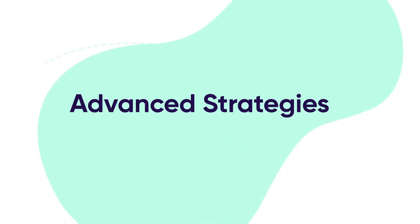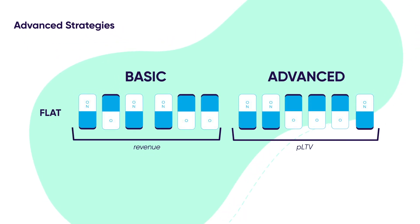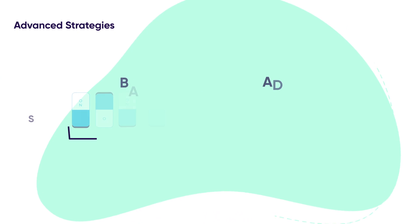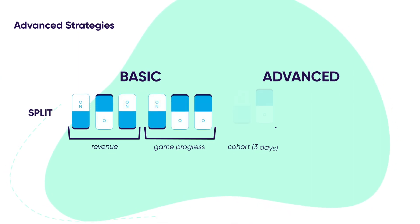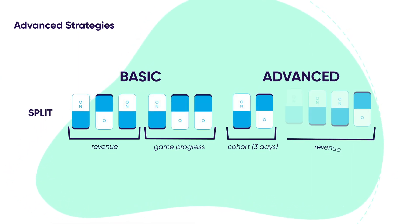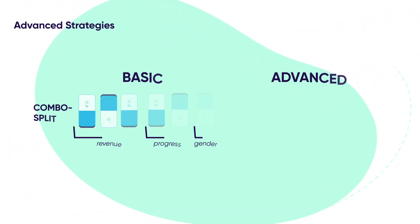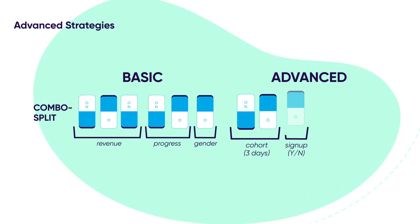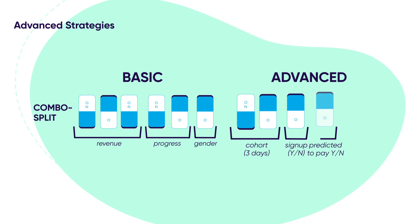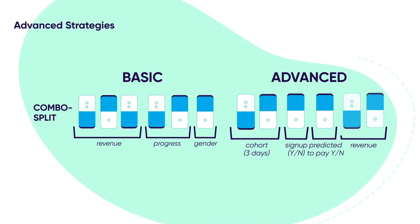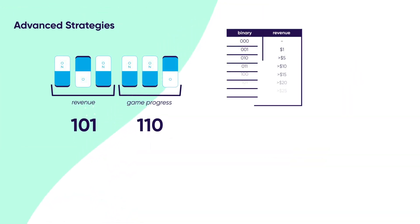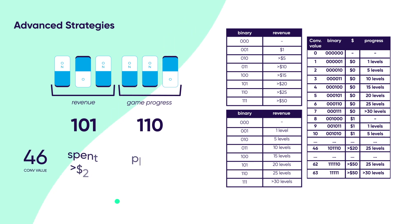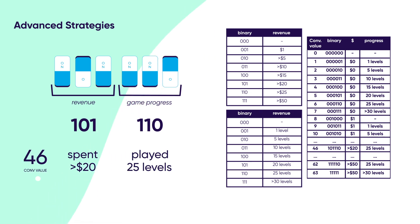Once you have the basic strategies down, there are some more advanced options too. First, you can use the flat splitting method for predictive analytics. Alternatively, an advanced split method might use two bits relating to cohort data and the remaining four bits to measure revenue. Finally, an advanced combo split method might use two bits for measuring three days of cohort data, one deterministic signal, another signal for a value prediction, and then two final bits to measure revenue. Your end result might look something like this. Don't worry if it seems complicated — these more advanced strategies may take a bit more time to understand and get exactly right.